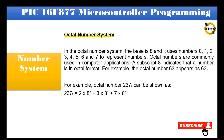Octal number system: In the octal number system, the base is 8 and it uses numbers 0, 1, 2, 3, 4, 5, 6, and 7 to represent numbers. Octal numbers are commonly used in computer applications. A subscript 8 indicates that a number is in octal format. For example, the octal number 63 appears as 63 base 8. For example, octal number 237 base 8 can be shown as: 237 base 8 = (2 × 8²) + (3 × 8¹) + (7 × 8⁰).